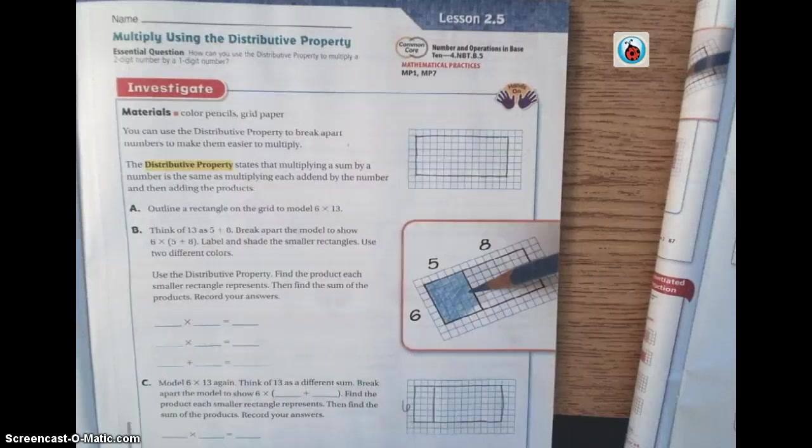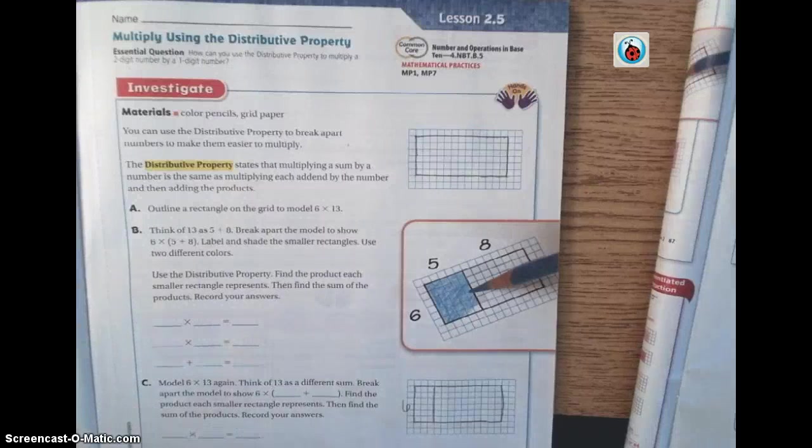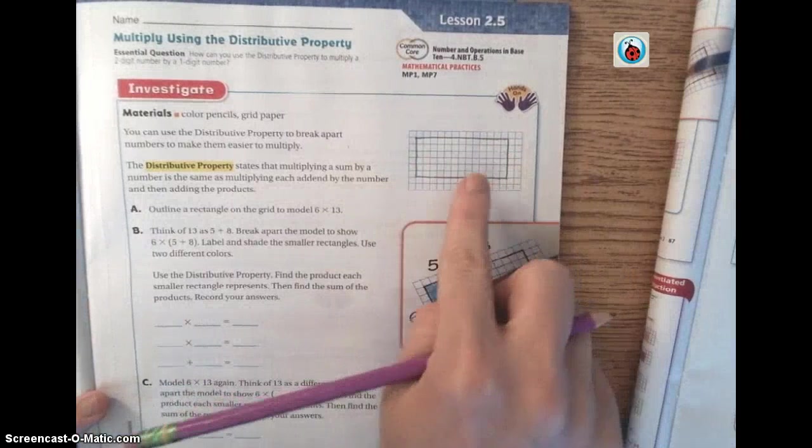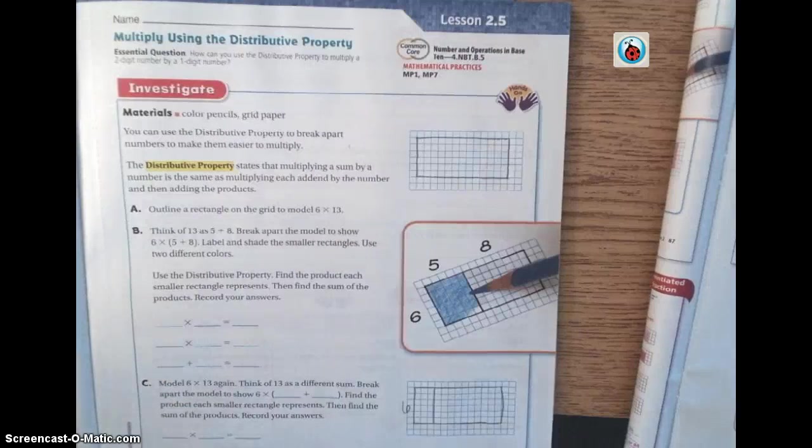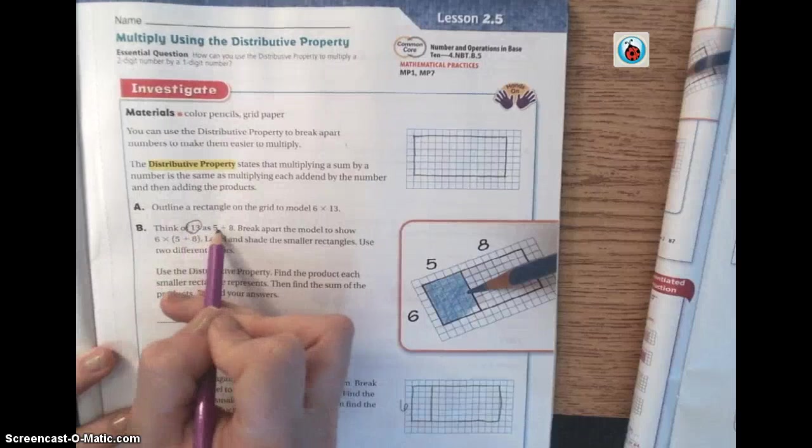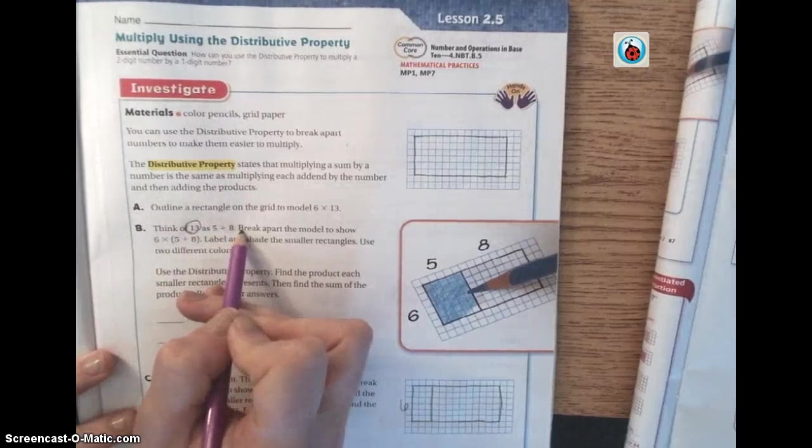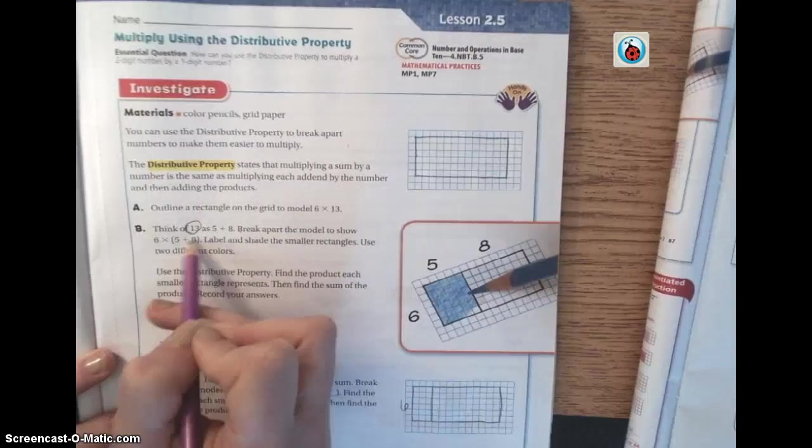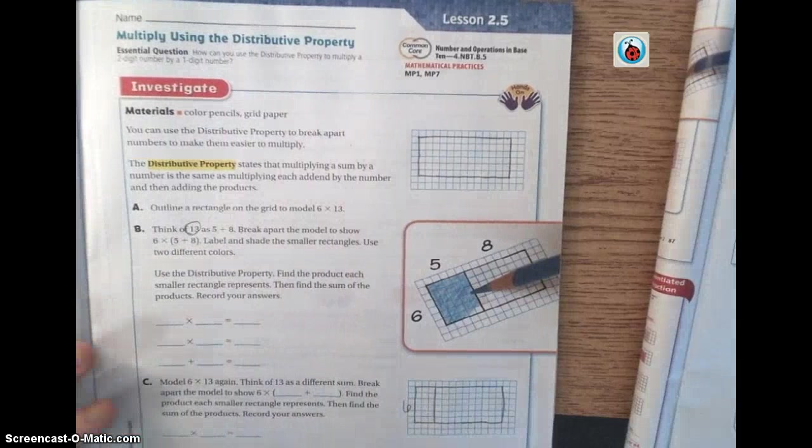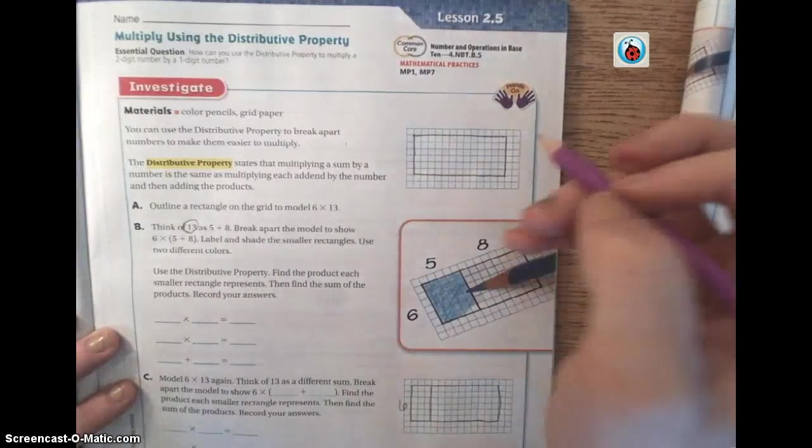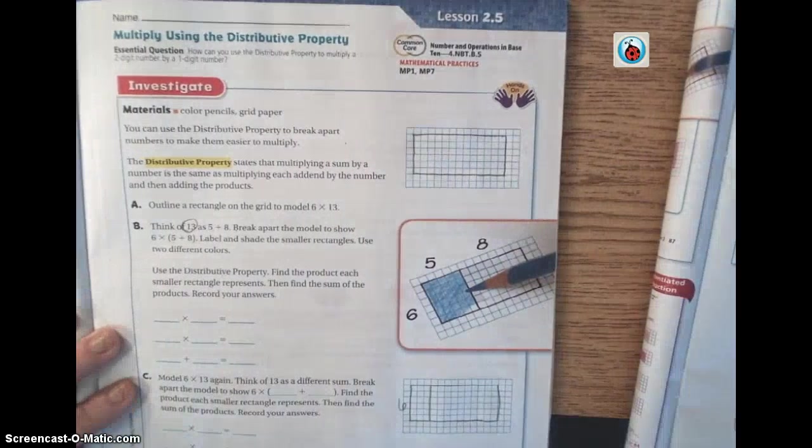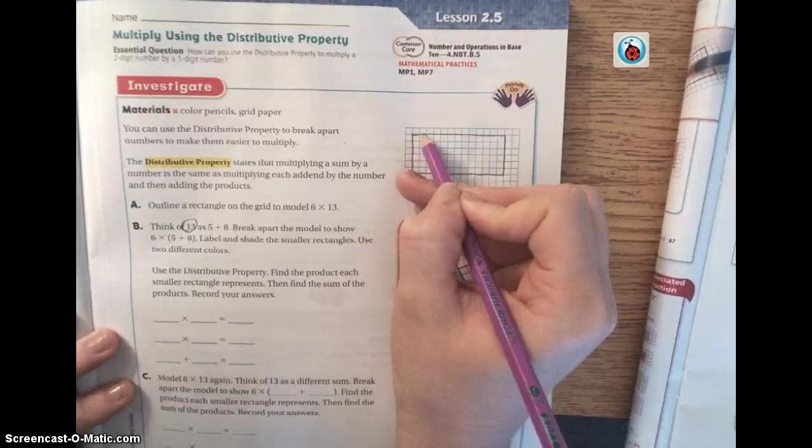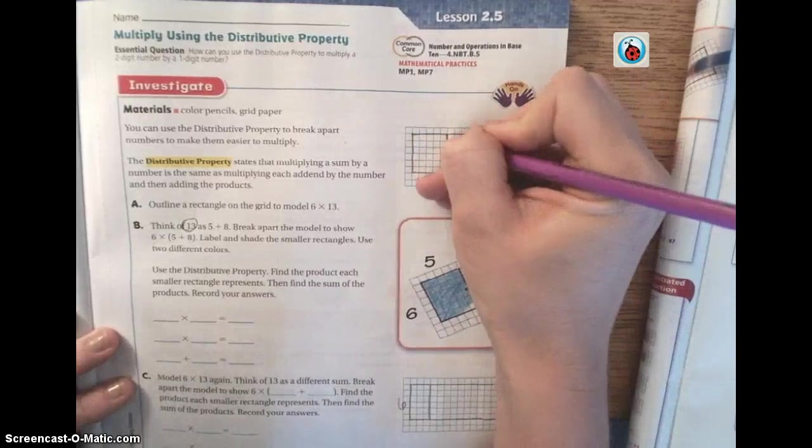The reason that we made this array is because we are going to then break this down using the distributive property. We're going to think of the number 13 as 5 plus 8. Is 5 plus 8 13, class? Yes. So we're going to break apart this model to show that 5 plus 8 times 6 is our answer. So our 5 plus 8 is going to be represented up here on this top line. So we're going to count across 5, 1, 2, 3, 4, 5, and go ahead and draw a line straight down for me.